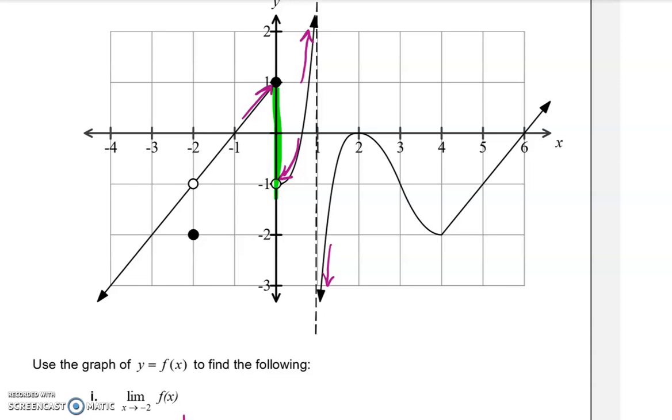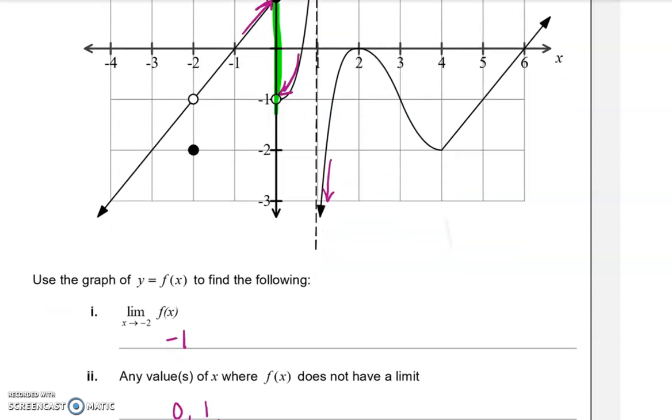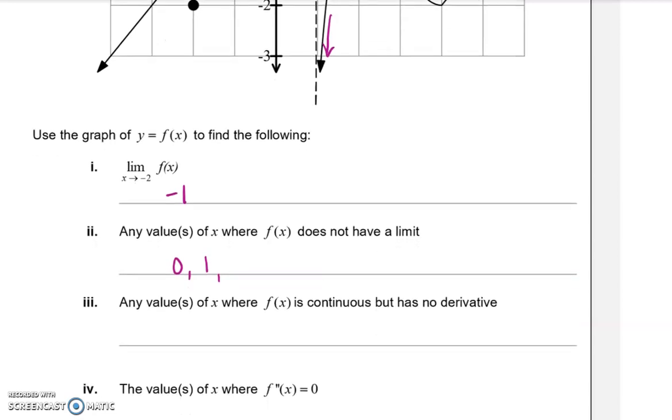And we'll see if there's anywhere else. No. As we go across that graph, everywhere else that we go to, if we were going from the left and the right, we would get the same values. So it's just 0 and 1.